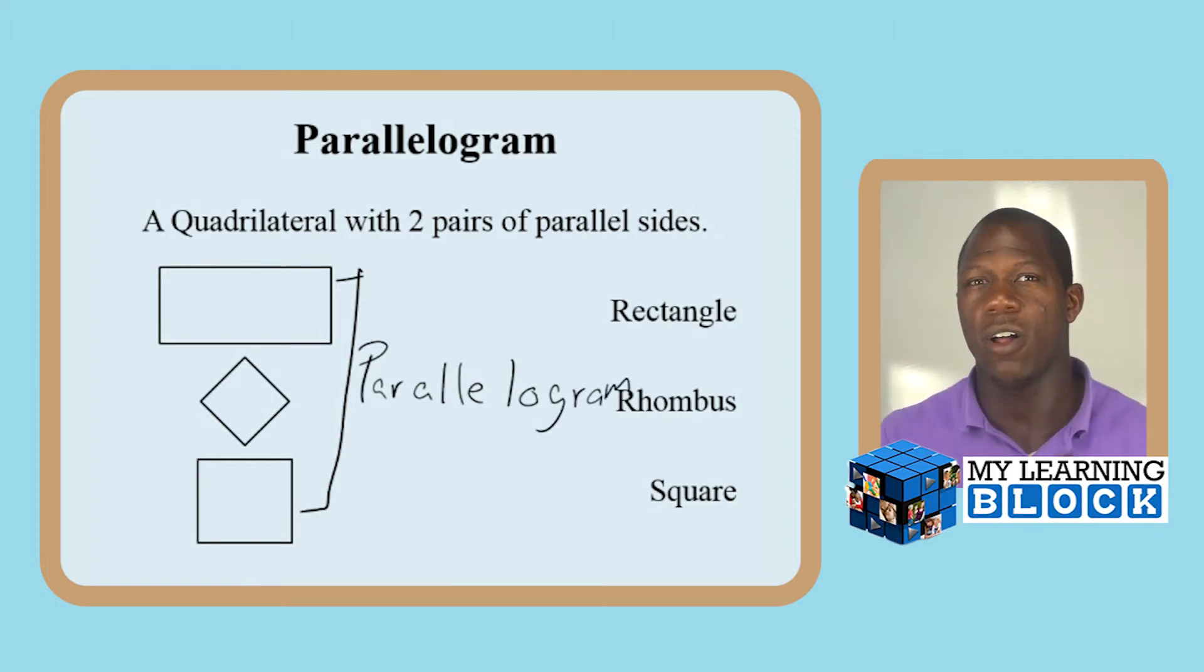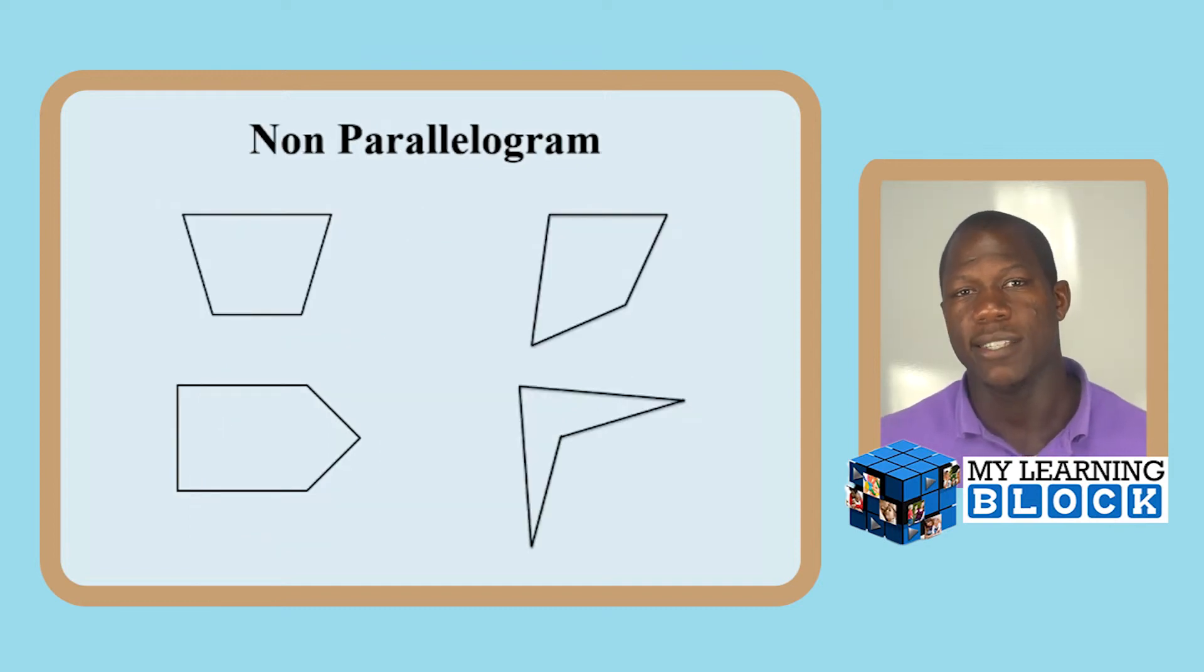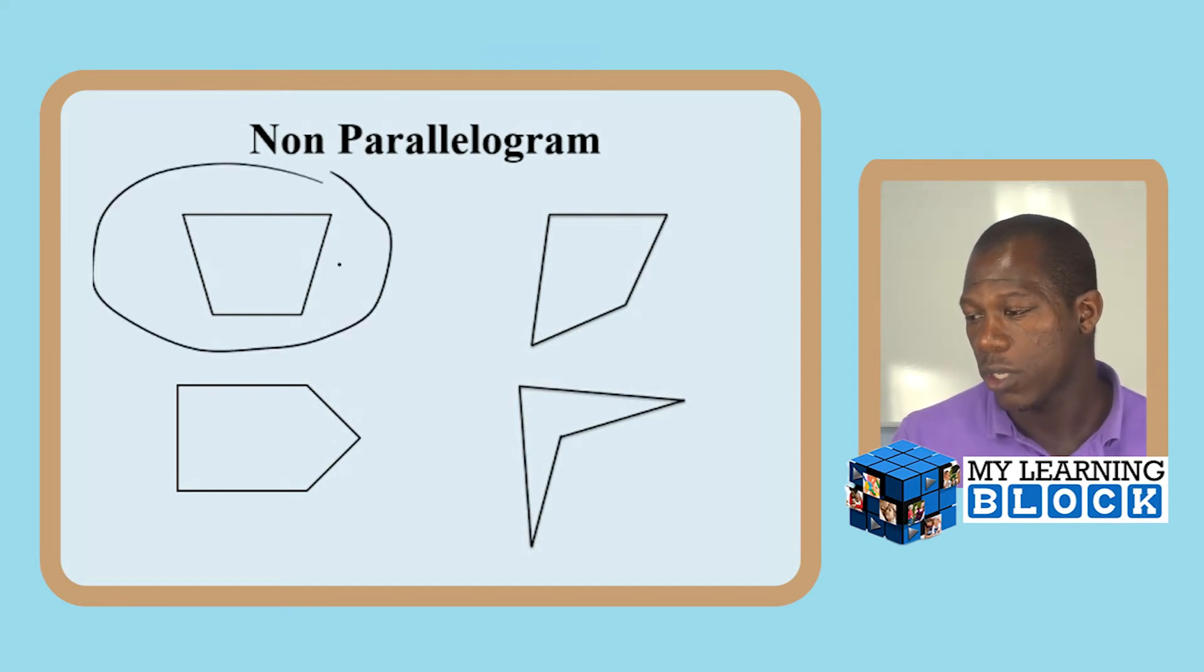However, not all of them. A rhombus is not a rectangle, right? So a rhombus and a rectangle aren't the same, but they are parallelograms. It's great categorizing things. Now, what are non-parallelograms? Any shape, any quadrilateral that your child recognizes that does not have two pairs of parallel sides. A tricky one is this first one right here, this trapezoid. Notice that these sides right here are not parallelograms.